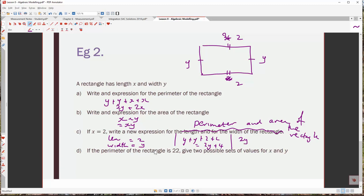All right, if the perimeter of the rectangle is 22, give two possible sets of values for x and y. So we know that 22 is equal to the perimeter and we've got 2y plus 2x. All right, so what could happen to make this true? All right, well y, let's just say that y is equal to 3. All right, so that's going to be 22 equals 2 times 3 plus 2x. 22 equals 6 plus 2x.